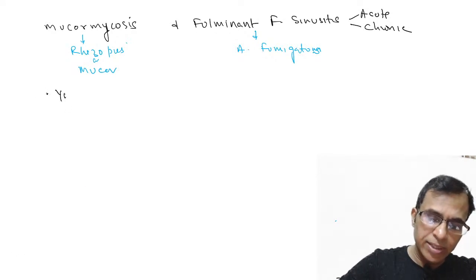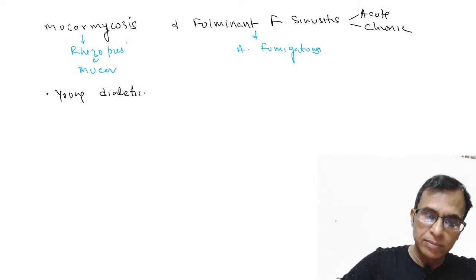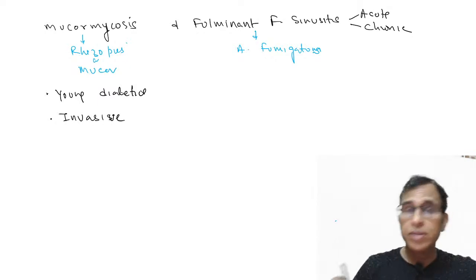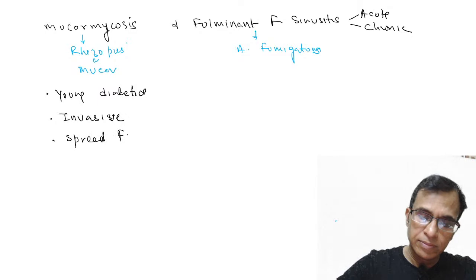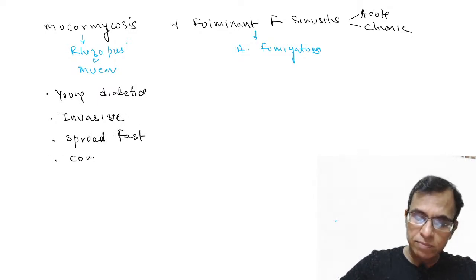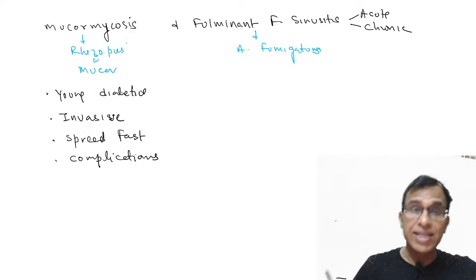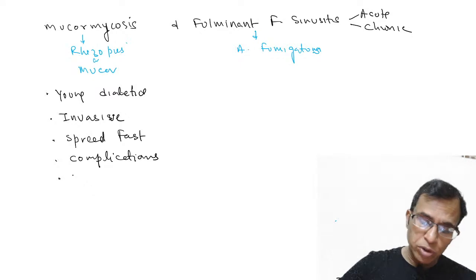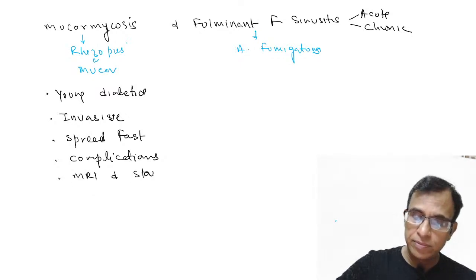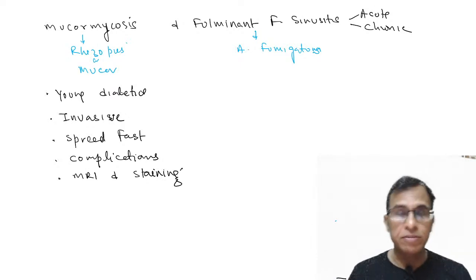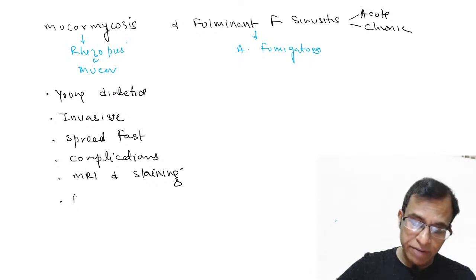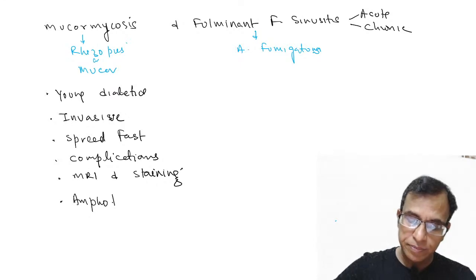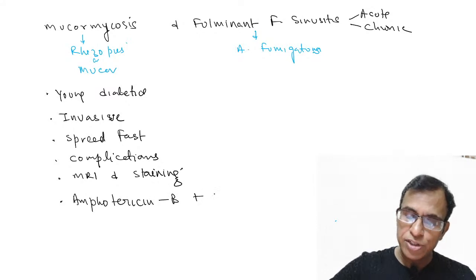Both mucormycosis and fulminant fungal sinusitis are seen in young diabetics. Both are invasive — unlike aspergillosis which was non-invasive. They spread very fast and cause a lot of complications. Diagnosis uses both MRI to show spread of disease, and staining (KOH, PAS, or other stains) to confirm. In both conditions, we give Amphotericin B as the main drug, plus surgical debridement.